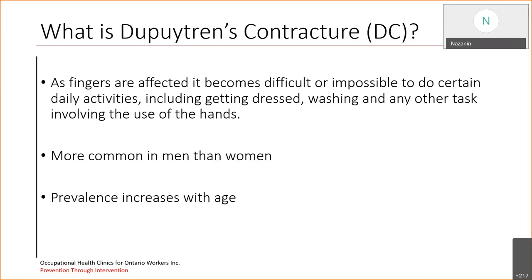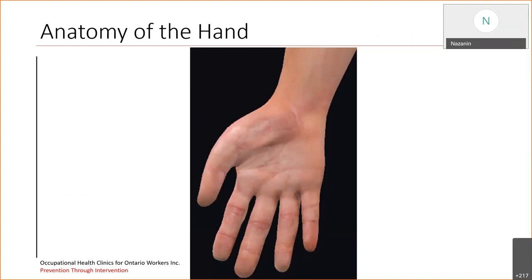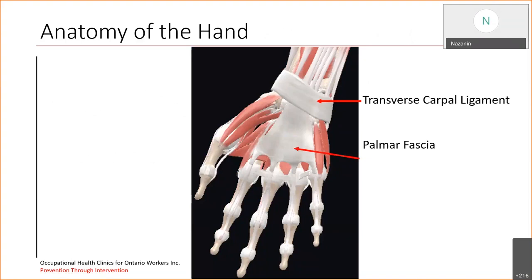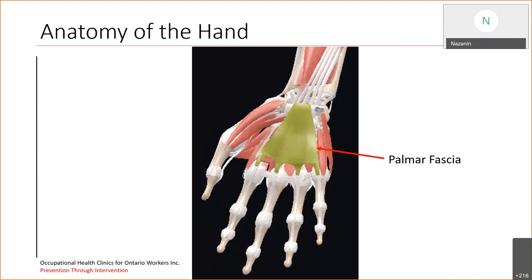It's more common in men than women and its prevalence increases with age. In terms of the anatomy of the hand and the structures affected by Dupuytren's Contracture, those would be the transverse carpal ligament and palmar fascia. We can get another view of palmar fascia here. Fascia is very important because it's very strong, and it gives you the strength to actually grip objects.